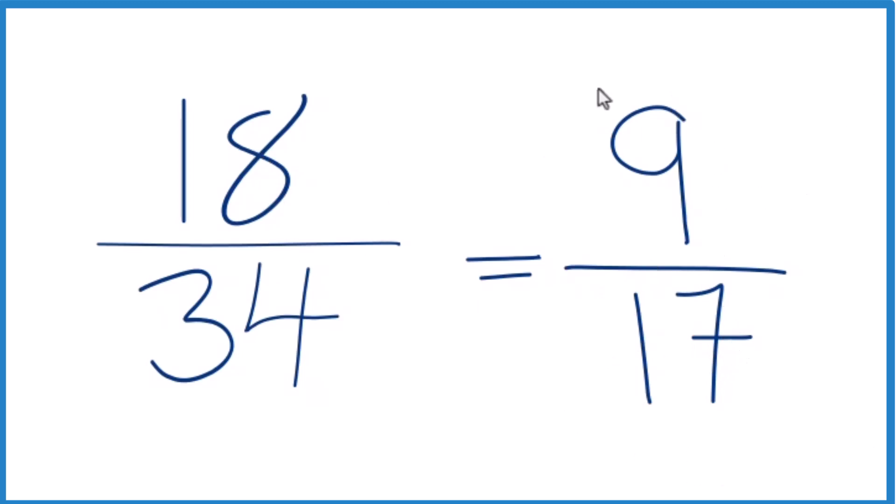We can't reduce this any further. If you divide 18 by 34 and 9 by 17, you'll get the same decimal answer. They're equivalent fractions. We've just reduced 18/34 down to 9/17.